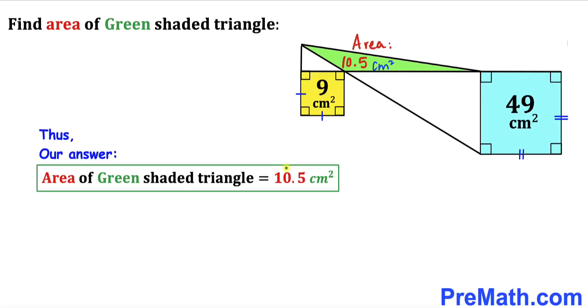So the area of this green shaded triangle is 10.5 centimeter square. Thanks for watching and please don't forget to subscribe to my channel for more exciting videos.